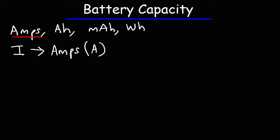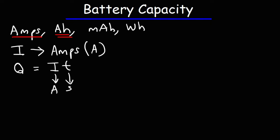Now what about amp hours? We need to talk about Q. Q represents the electric charge and it's equal to the current multiplied by the time. The current is measured in amps and the time is measured in seconds, but it could be measured in minutes or hours. So when you multiply amps times hours, it really is a unit of charge capacity — it tells you how much electric charge is stored in the battery.